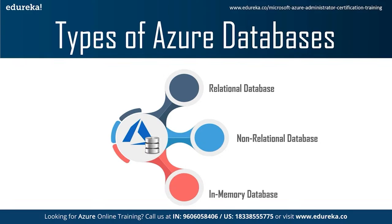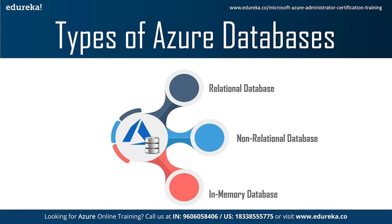Third is the in-memory database, also known as IMDB, main memory database system (MMDB), or memory-resident database. An in-memory database is a database management system that primarily relies on main memory for computer data storage, contrasted with disk-based systems. In-memory databases are faster because disk access is slower than memory access, the internal optimization algorithms are simpler, and accessing data in memory eliminates seek time, providing faster and more predictable performance. A potential hurdle is the volatility of RAM — data stored in volatile RAM is lost in the event of a power loss. With non-volatile RAM technology, in-memory databases will be able to run at full speed and maintain data even during power failure.